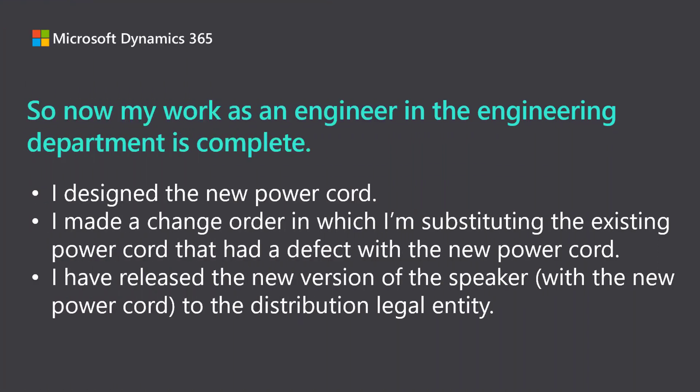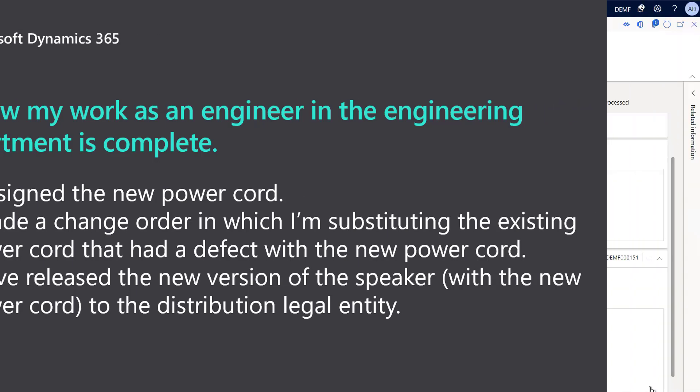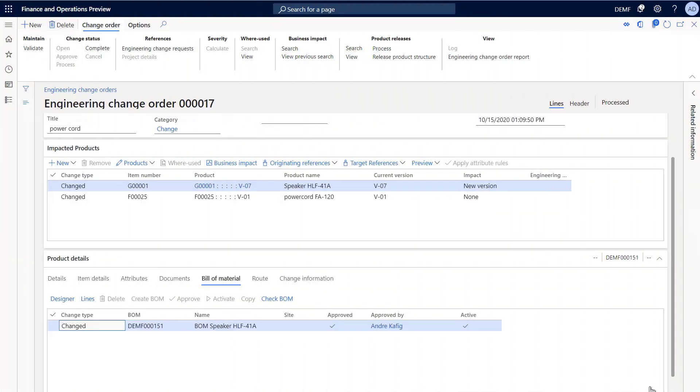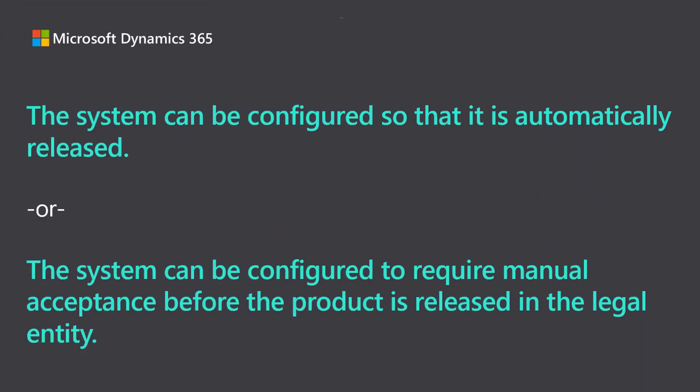My work as an engineer in the engineering department is completed. I have designed the new power cord, I have made a change order in which I'm substituting the existing power cord that had a defect with the new power cord, and I have released the new version of the speaker with the new power cord to the distribution legal entity. There's just one more thing for us to do: we need to release the new version of the speaker in the distribution company USMF. The system can be configured so that it is automatically released, or the system can be configured to require manual acceptance before the product is released in the legal entity.